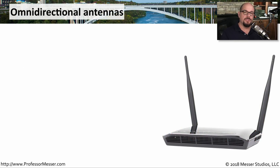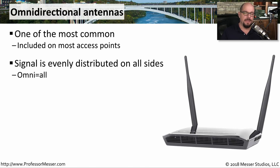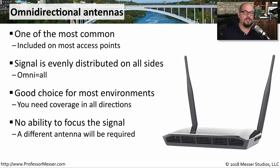Wireless access points and routers typically come with omnidirectional antennas, which distribute the wireless signal evenly on all sides. This allows you to place the access point in a central location and have effectively the same signal strength on all sides. However, if your access point is on one side of where you need the signal to go, you may want to use a more directional antenna.